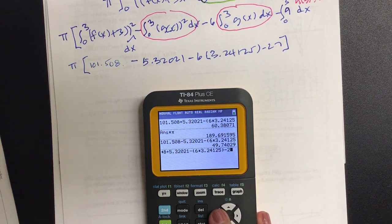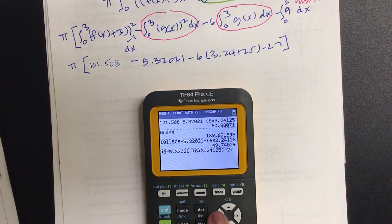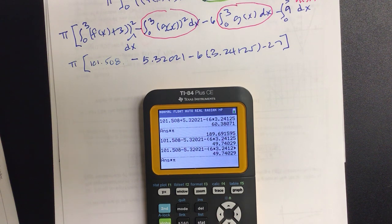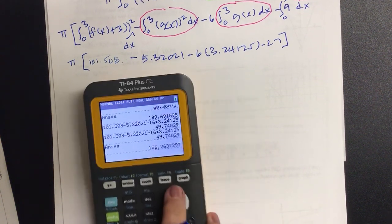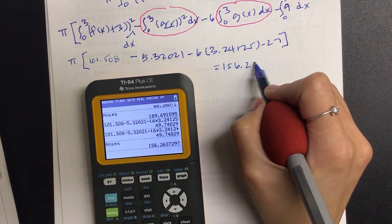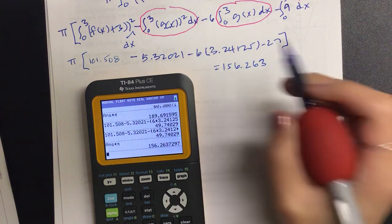Okay, let's see if I did my parentheses correctly. That should be minus, and then times that by pi. Yep, so we get 156.263.